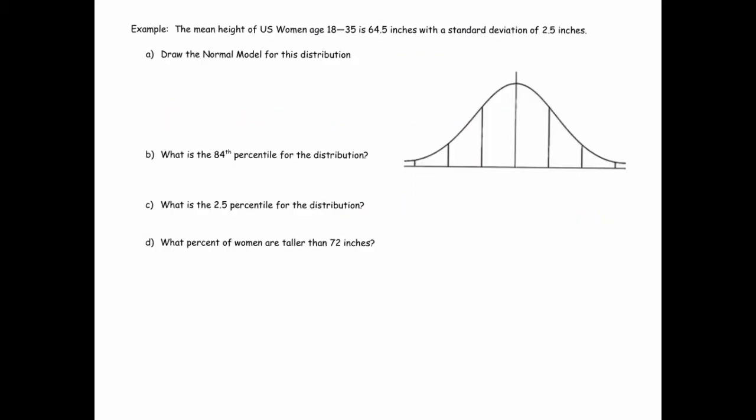So let's actually apply this empirical rule. This says that the mean height of U.S. women aged 18 to 35 is 64.5 inches with a standard deviation of 2.5 inches.